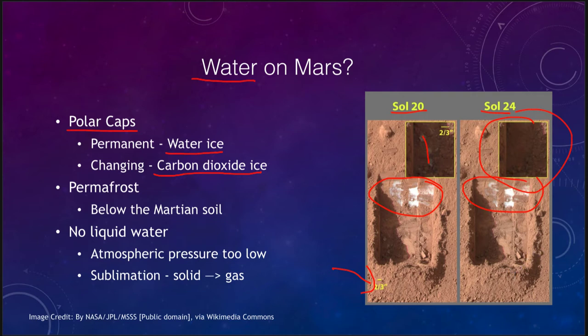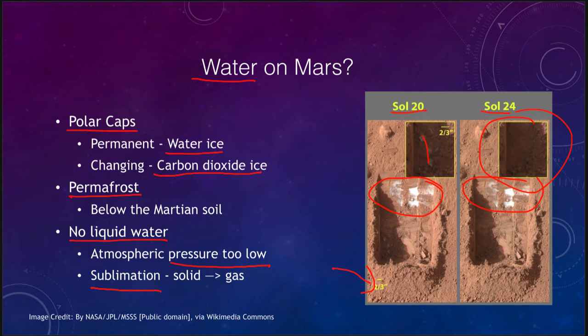We do know that there is some water between the permafrost below and the polar caps at the poles of Mars. However, there is no significant liquid water, primarily because the atmospheric pressure is far too low. That means that water on Mars would behave like dry ice does on Earth — it would undergo a process called sublimation. A block of ice on Mars, if it got warm enough, would not melt as it does on Earth; it would change directly from a solid into a gas.